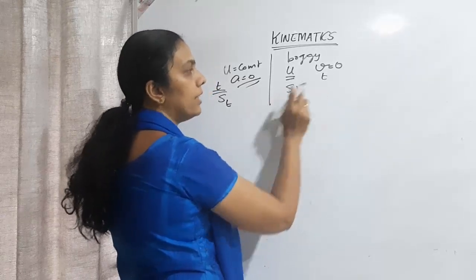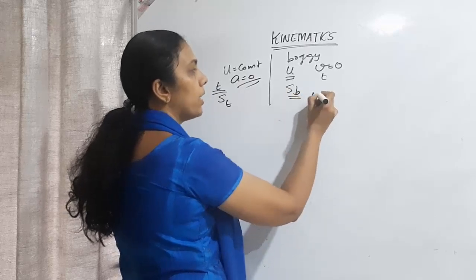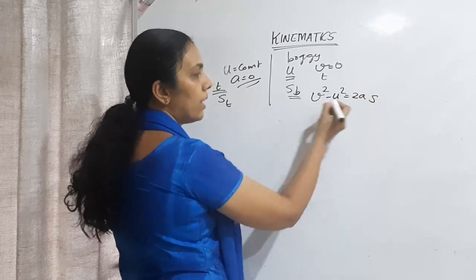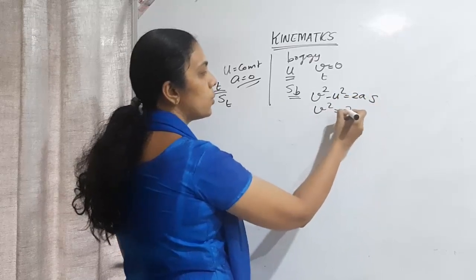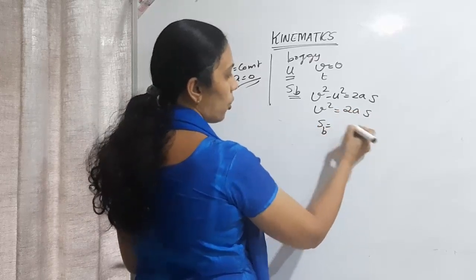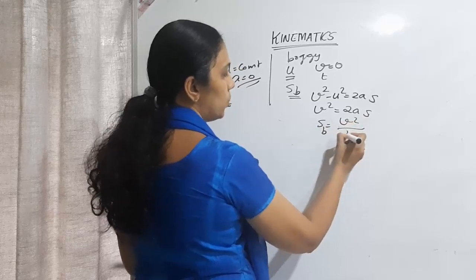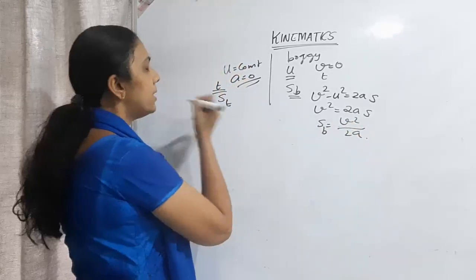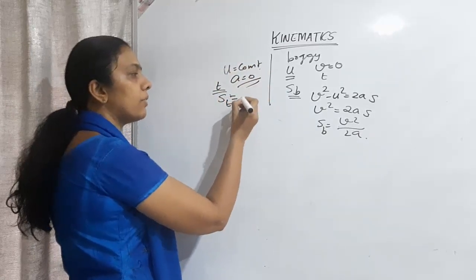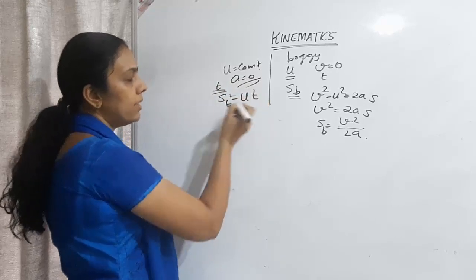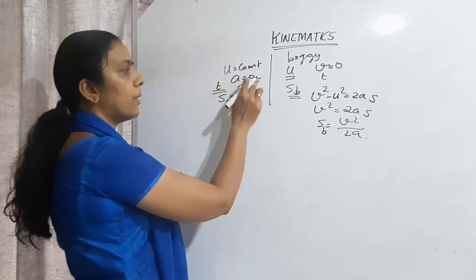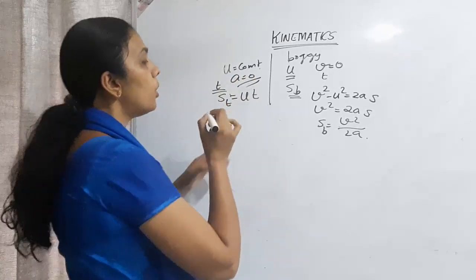Distance covered by the boggy: using v² - u² = 2as with v = 0, we get s_boggy = u² / 2a (where a is the retardation magnitude). For the train, since it moves with uniform velocity, distance traveled by the train = u × t, since its acceleration is 0.